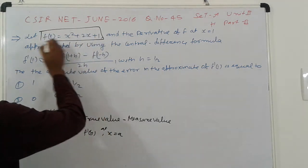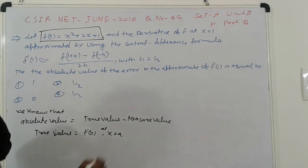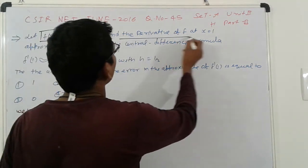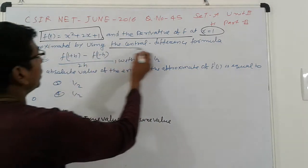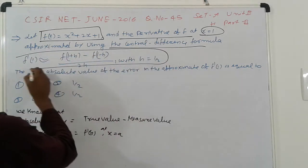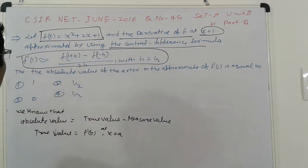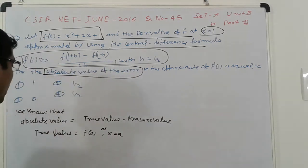Here given is f(x) = x² + 2x + 1 and the derivative of here x = 1 approximate by using the central difference and this formula is given. That is given here. So find out the absolute value of the error. That is important.